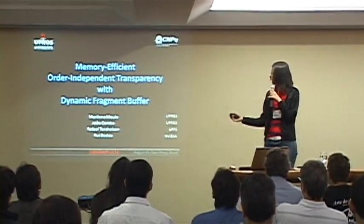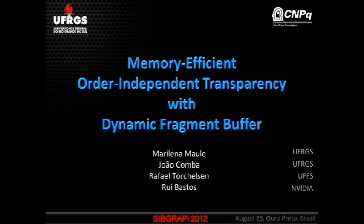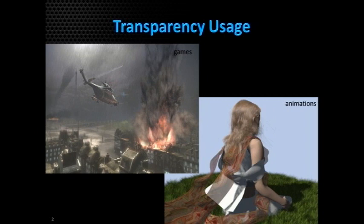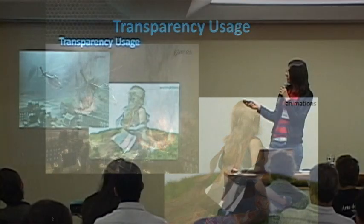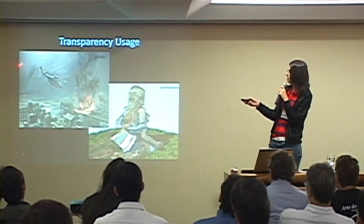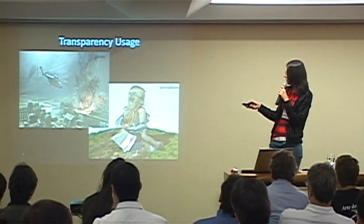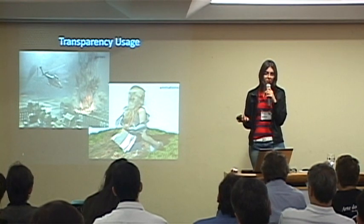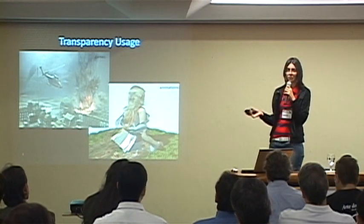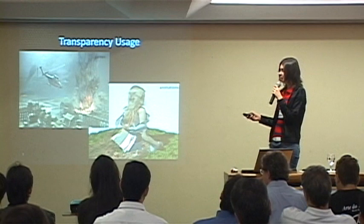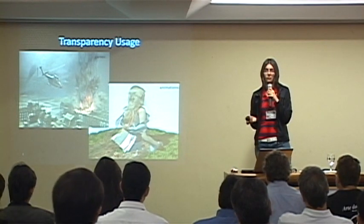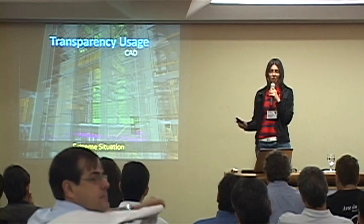I'm Lena and I will present a technique to render order independent transparency. I'd like to start by talking about the importance of transparency in rendering real scenes. Here we can see a game scene with rain particles, smoke, dust, and fires — all these effects are rendered using transparency. And here an image representing animation movies, also using transparency in the hair, the clothes, and in the grass.